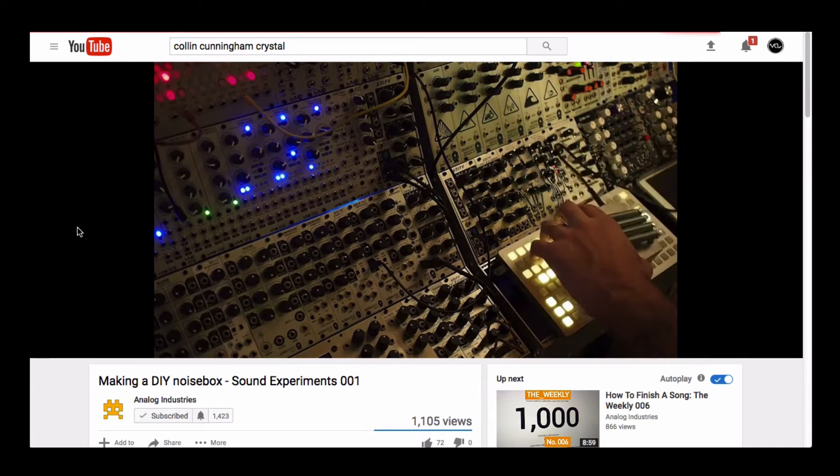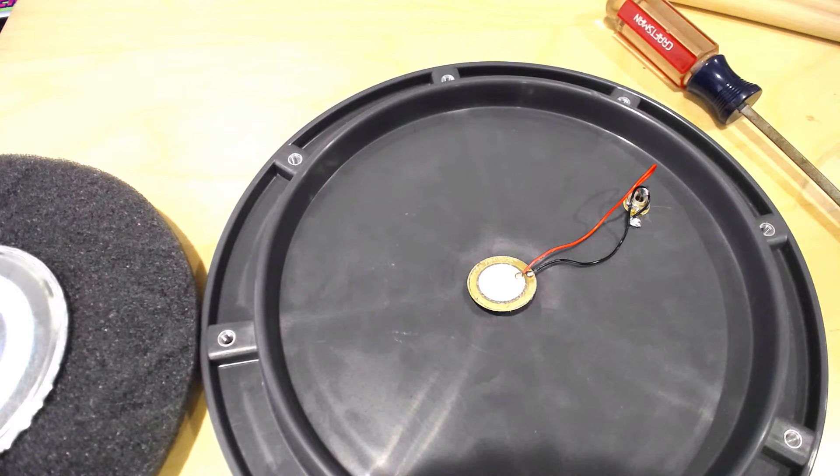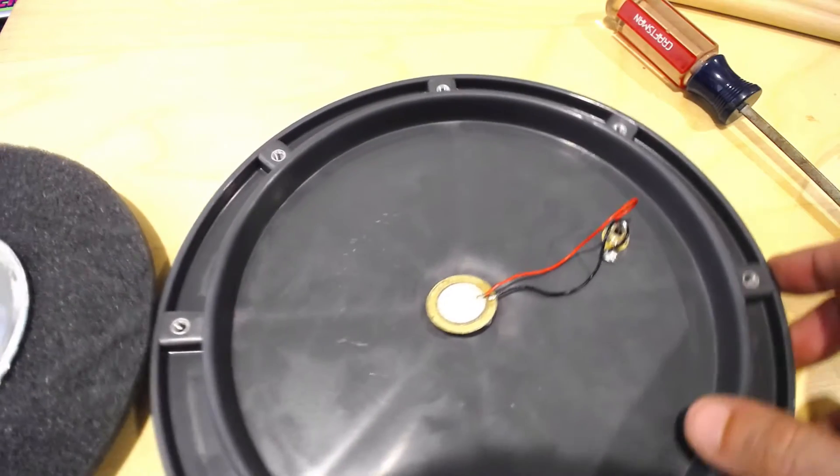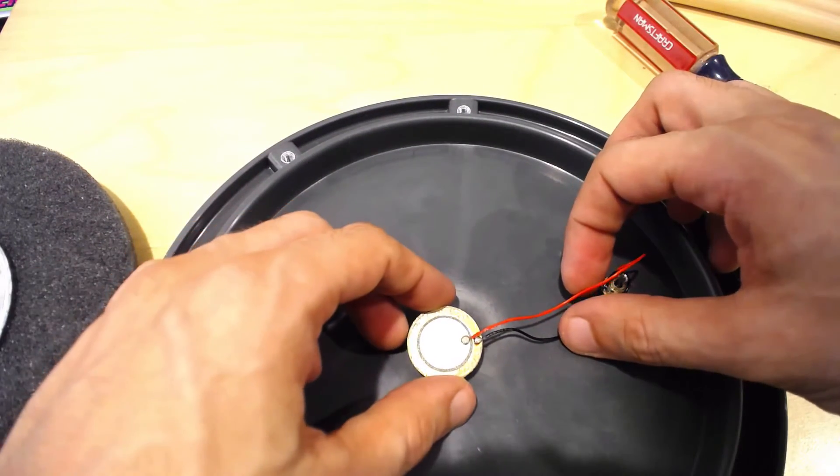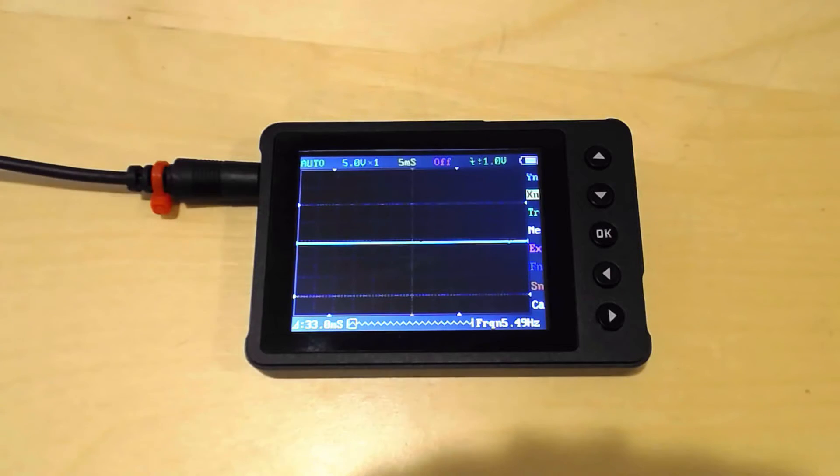Not only can these cool components act as sensitive mics, but the voltage spikes that they generate can be used as triggers for drum sounds and modules. And if you're concerned about the voltage being too much for your system, you can connect the piezo directly to a multimeter or oscilloscope to measure the voltage output.